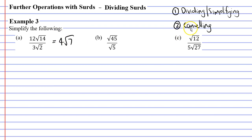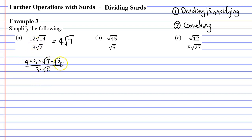Now I'll show the cancelling method for question A. I need to split the numbers up: 12 becomes 4 times 3, and root 14 becomes root 7 times root 2. The denominator 3 root 2 is written as 3 times root 2. I can then cancel the 3s and the root 2s above and below, leaving 4 root 7. For question A, the dividing method was clearly the quickest and simplest.